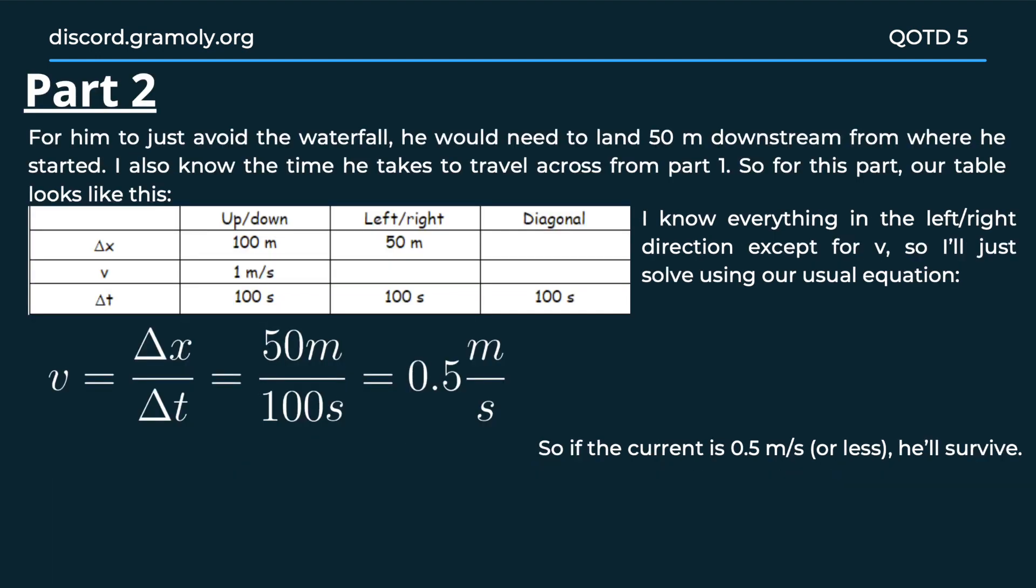Moving on to the second part. We know that the time interval is 100 seconds. If we look at the other dimension, we need to know the maximum velocity of the current if the swimmer is to survive the swim by going straight across. Using the same relation, except this time the displacement would be 50 meters in the direction along the current. Performing the same operation on these new values, we get the velocity to be 0.5 meters per second.